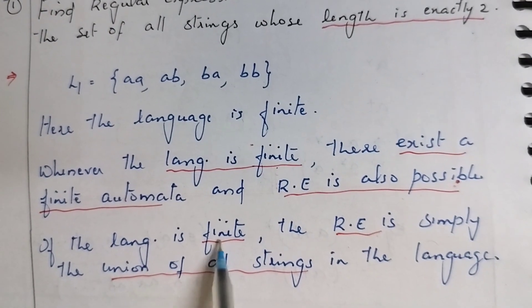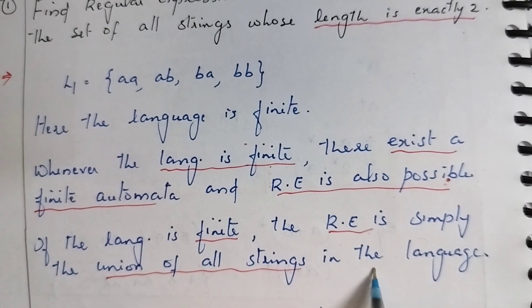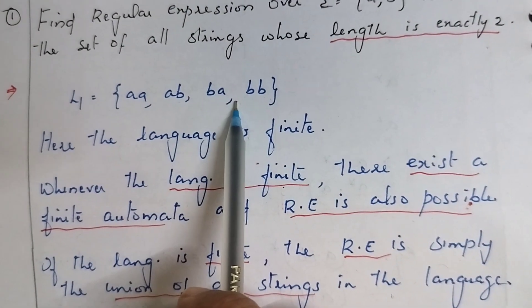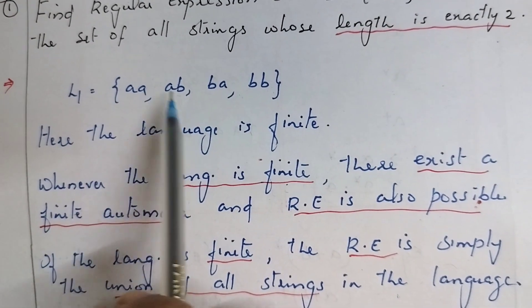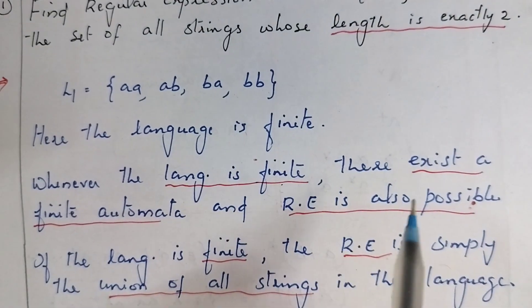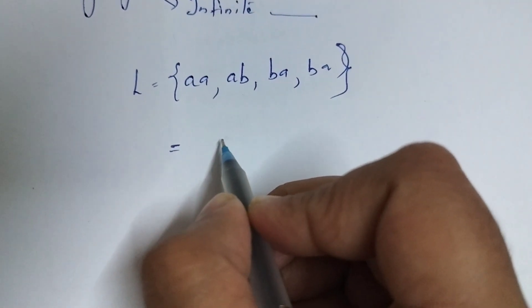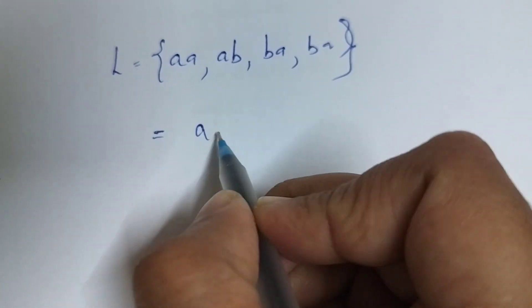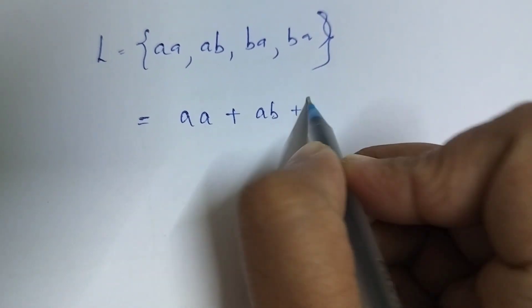If the language is finite, the regular expression is simply the union of all strings in the language. If we have a finite number of strings, we can find the regular expression by performing the union of all strings in the language.